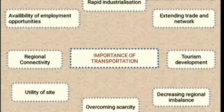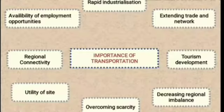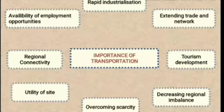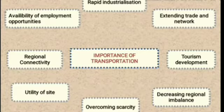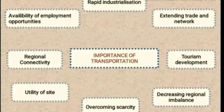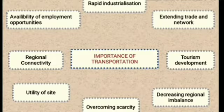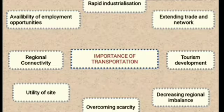Next is overcoming scarcity. As transportation is well developed, there won't be a scarcity of any goods — food grains, vegetables, or any other commodities — because roadways, railways, and waterways are well developed, and it could not cause any scarcity in any region. Next is decreasing regional imbalance. Due to developed transportation facilities, goods and services will be equally available to all developed as well as undeveloped regions, decreasing regional imbalance.